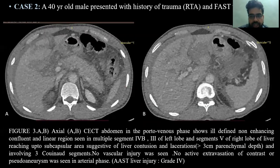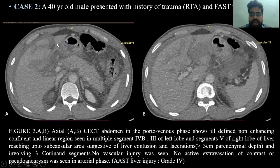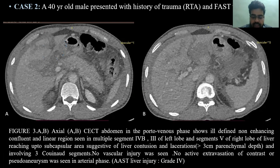Case 2: A 40-year-old male presented with history of trauma and was FAST-positive. The ill-defined non-enhancing confluent and linear region was seen in the liver involving bilateral lobes, reaching up to the sub-capsular area, consistent with liver contusion and laceration. The parenchymal depth was more than 3 cm involving 3 Couinaud segments. No vascular injury was seen. This was graded as AAST grade 4.